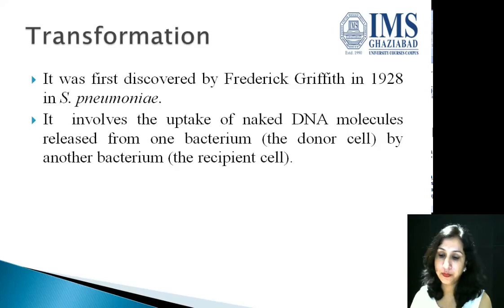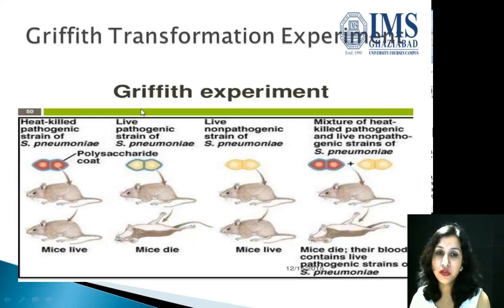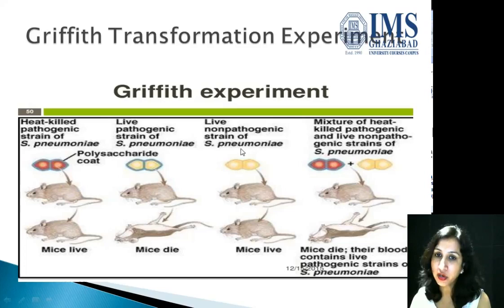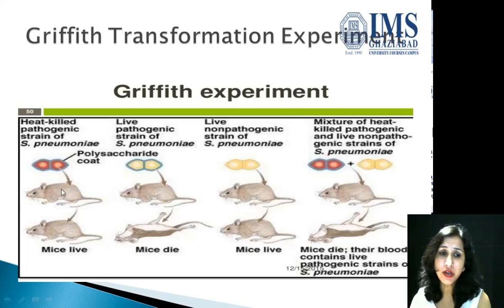Griffith's experiment showed that there is some genetic material. In this experiment, Griffith took a heat-killed pathogenic strain of pneumonia, a live pathogenic strain of pneumonia, a live non-pathogenic strain of pneumonia, and a mixture of heat-killed pathogenic and live non-pathogenic strains. When the heat-killed pathogenic strain was transferred into mice, the mice survived.